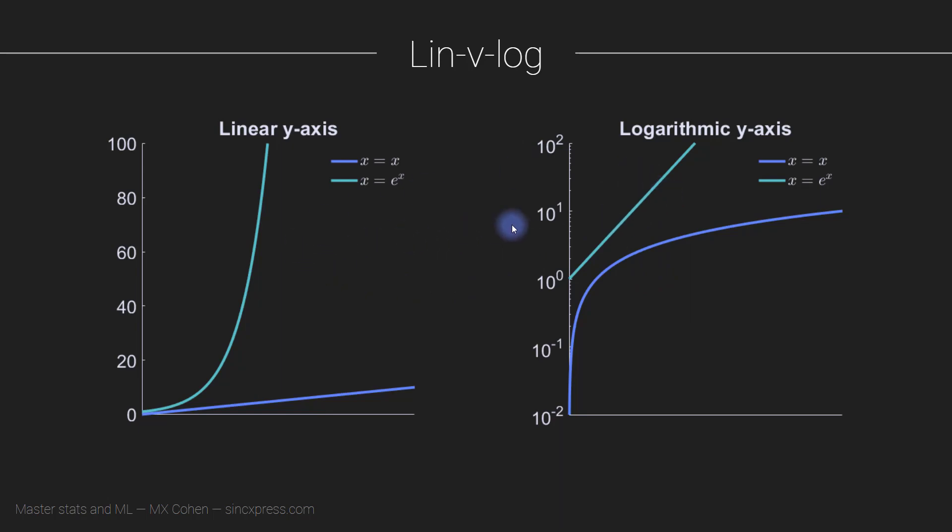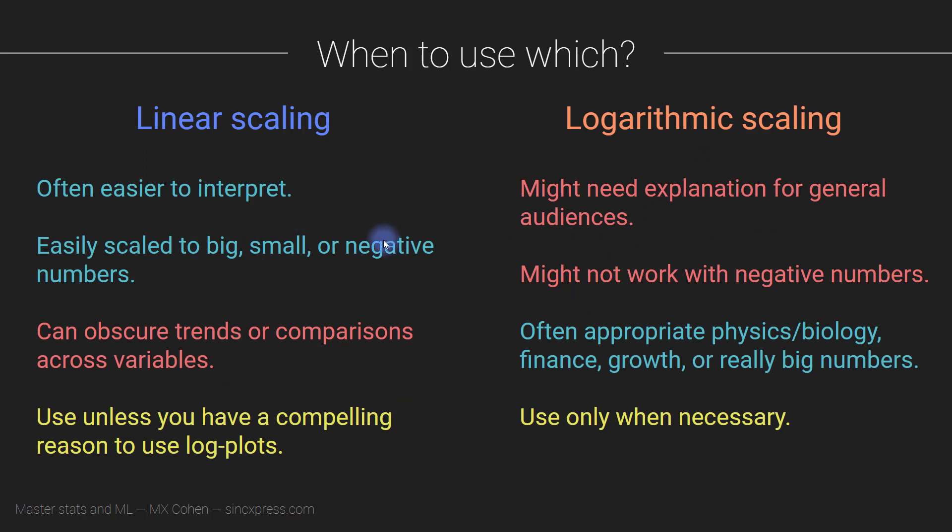So what are the pros and cons of linear versus logarithmic scaling? That's listed here in this table, linear scaling over here, logarithmic scaling over here. Linear scaling is generally easier to interpret. And that's really just because most of the plots that you see in your life are linearly scaled or have linear scaling y-axes, so they're just a little bit easier to interpret. Logarithmic scaling might need a little bit more explanation or unpacking, particularly if you are showing the logarithmically scaled axes to a general audience, people who are not necessarily used to looking at logarithmic scales, maybe people who don't have some formal training in some aspect of science where logarithmic scales are common.